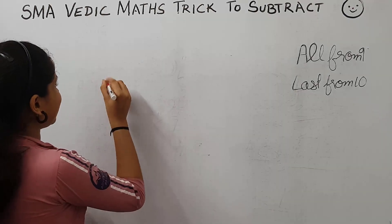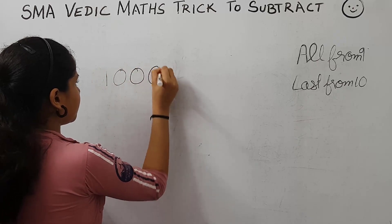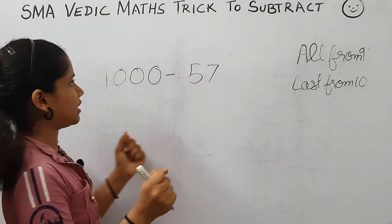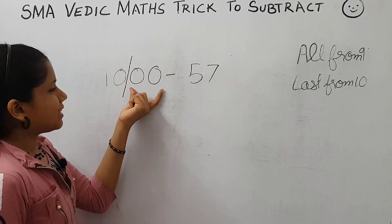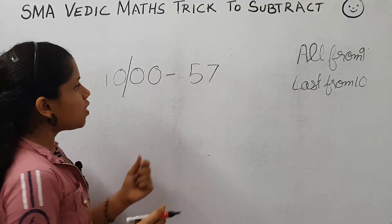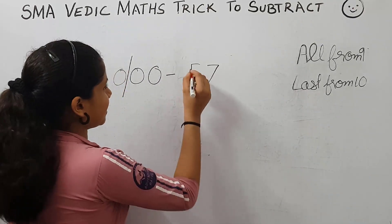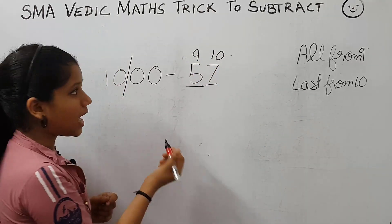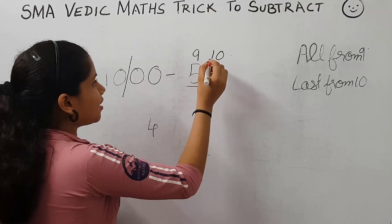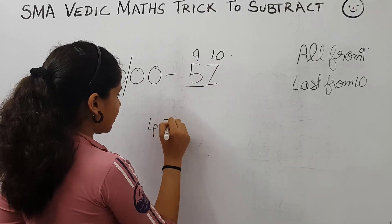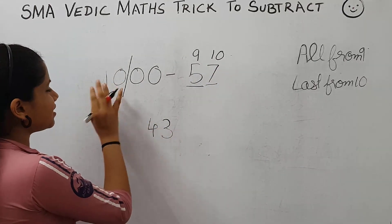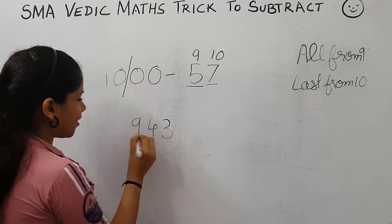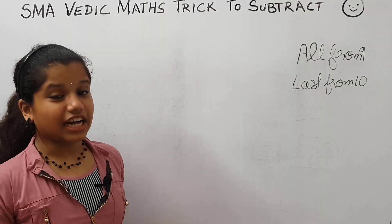Now let's take 10,000 minus 57. Here there are three zeros but only two digits, so we put a slash here to make the number of zeros and number of digits equal. Now we apply the rule all from 9 and last from 10. 9 minus 5 is 4, 10 minus 7 is 3. Now we subtract 1 from the left side of the slash: 10 minus 1 is 9. Write 9 on the left side. The answer is 9,943.